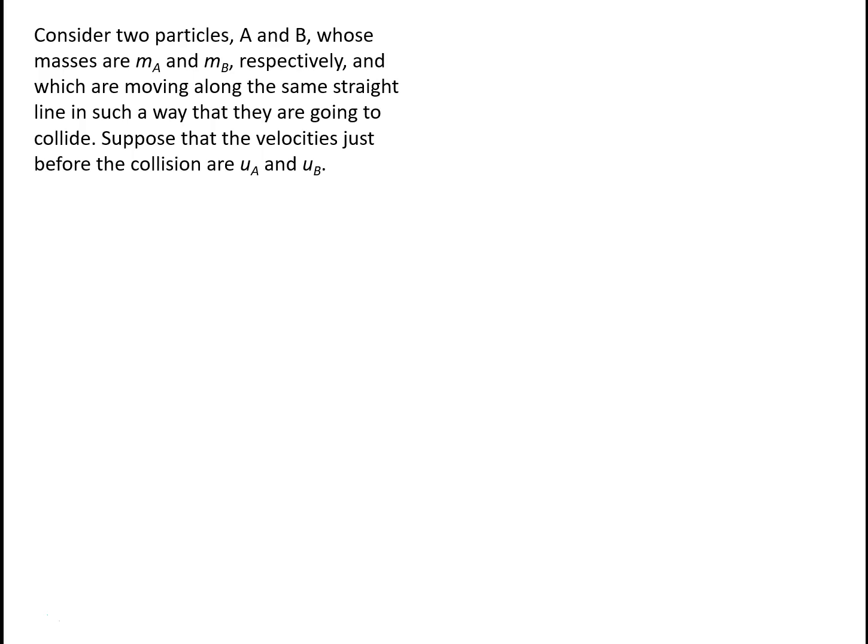Let's suppose that we've got two particles A and B, whose masses are Ma and Mb respectively, and which are moving along the same straight line in such a way that they are going to collide. Suppose, moreover, that the velocities just before the collision are Ua and Ub.